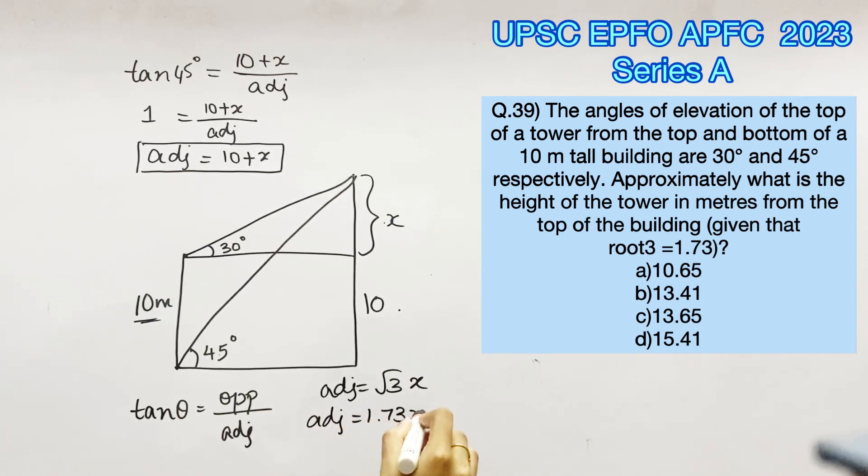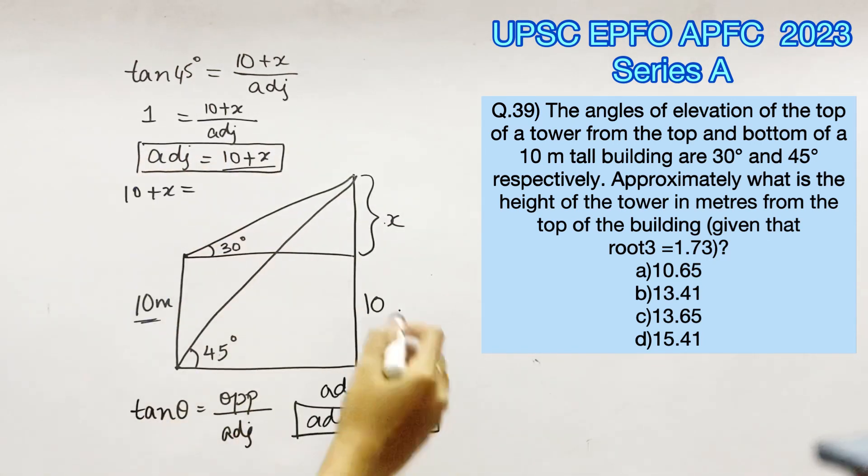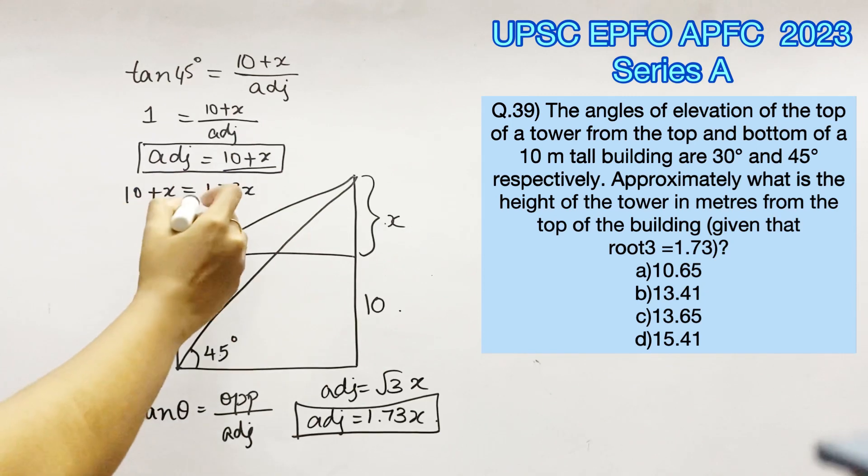Now we know that both these adjacent sides are equal because they are separated by equal distance. Therefore we can equate both these adjacents, which will give us 10 plus x equals 1.73 x.